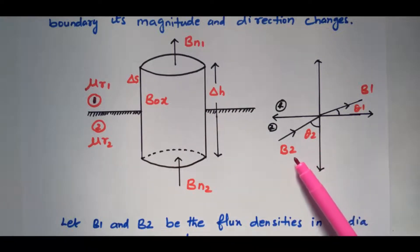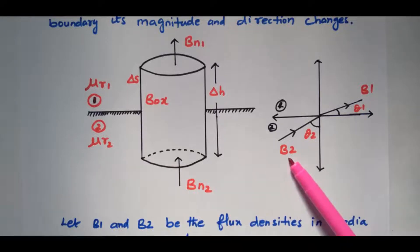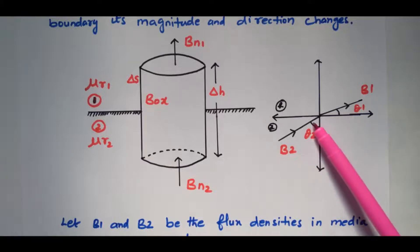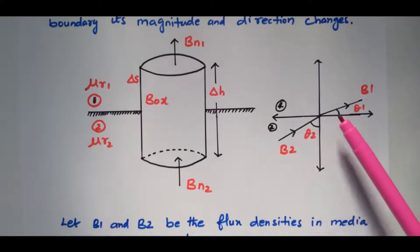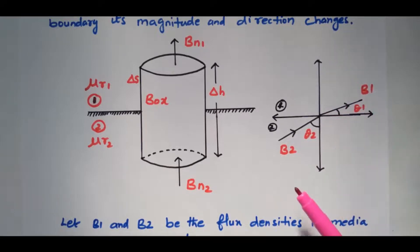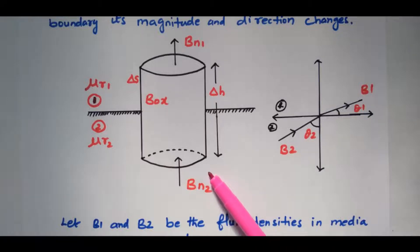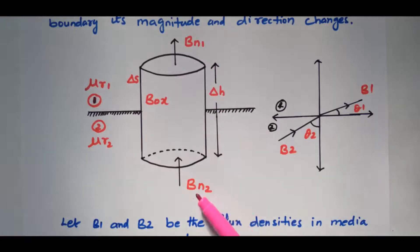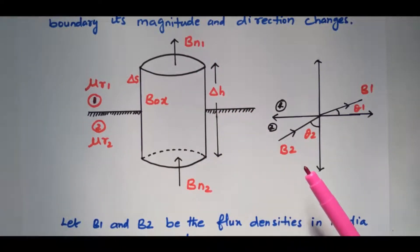This vector diagram shows B2 and B1, the flux density vectors. Theta2 is the angle of incidence — meaning entering — and theta1 is the angle of emergence, meaning leaving. Our aim is to analyze whether BN1 and BN2 are equal or if there is any deviation.